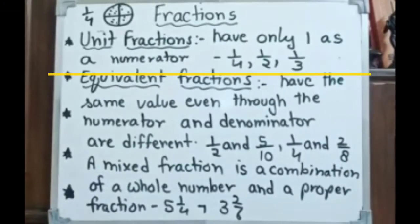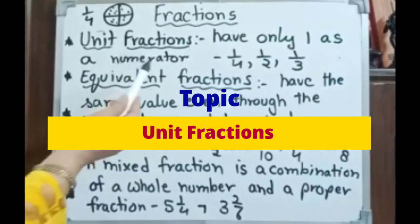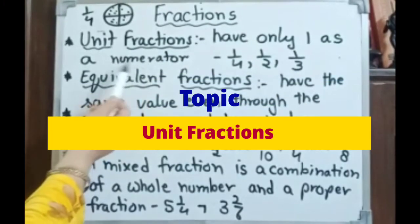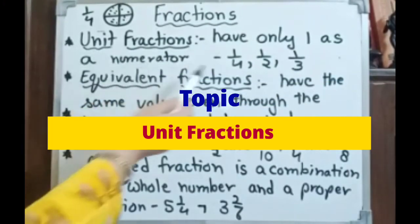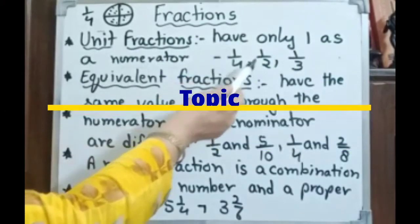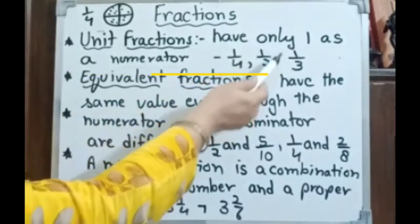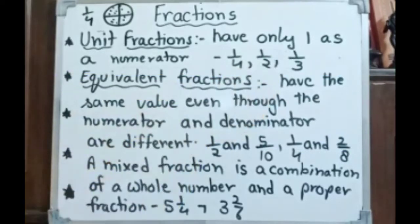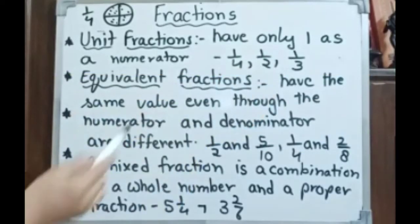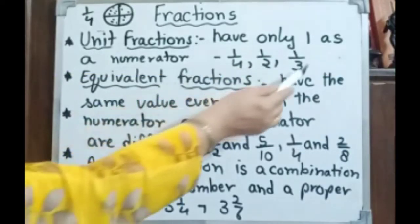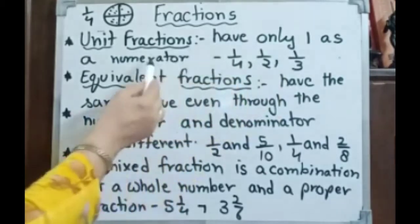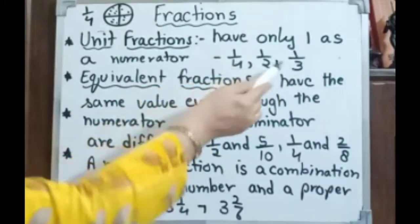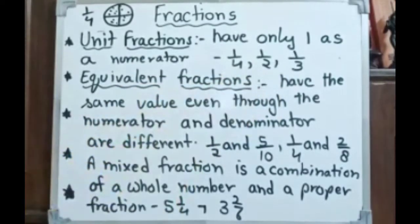Unit fractions have only 1 as a numerator — for example, 1 by 4, 1 by 2, 1 by 3. The numerator is 1 in all three fractions, so these are called unit fractions.